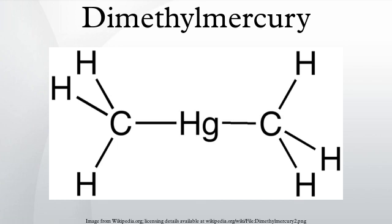Dimethylmercury crosses the blood-brain barrier easily, probably owing to formation of a complex with cysteine. It is eliminated from the organism slowly, and therefore has a tendency to bioaccumulate. The symptoms of poisoning may be delayed by months, resulting in many cases in which a diagnosis was ultimately discovered only at the point where it is often too late for an effective treatment regimen to be successful.